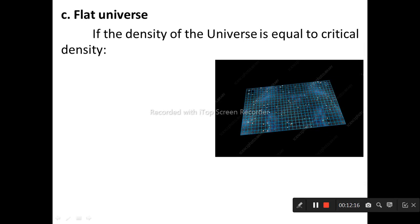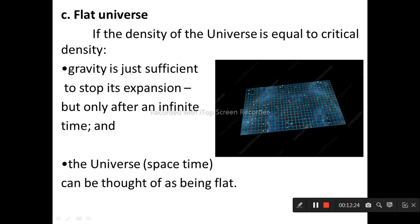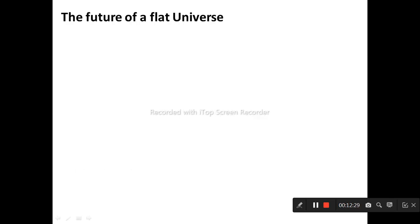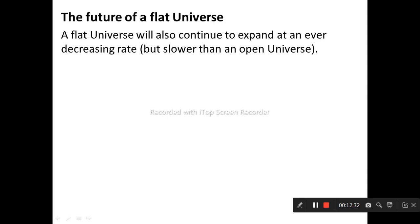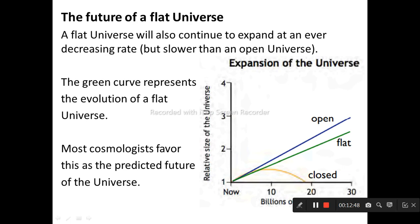If the density of the universe is equal to the critical density, gravity is just sufficient to stop its expansion but only after an infinite time, and the universe can be thought of as being flat. A flat universe will also continue to expand at an ever-decreasing rate but slower than the open universe. The green curve represents the evolution of a flat universe. Most cosmologists favor this as the predicted future of the universe.